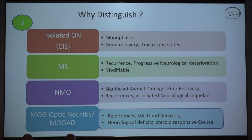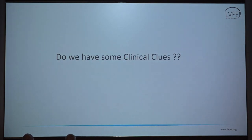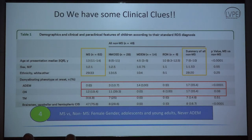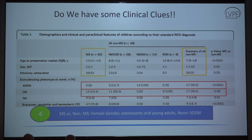Why is it important to distinguish between the underlying etiology? The chances of recurrence are different in each disease, as well as the amount of damage and progressive neurological disability that can occur — particularly with MS and NMO. A UK group study showed that patients with MS versus non-MS more often tended to be female, adolescent and young adults, and more often presented with a brainstem clinically isolated syndrome.